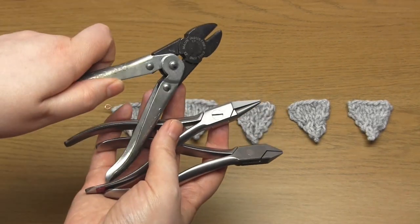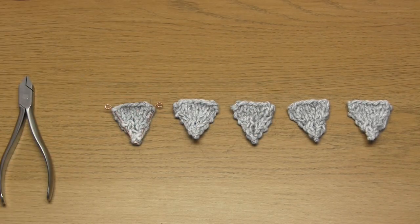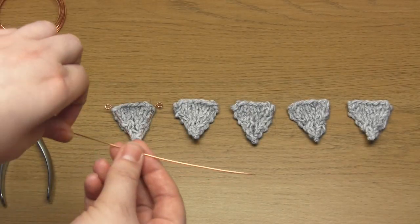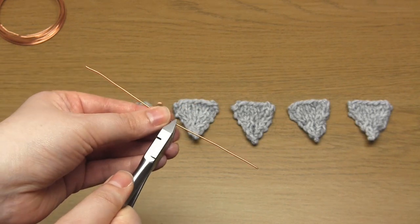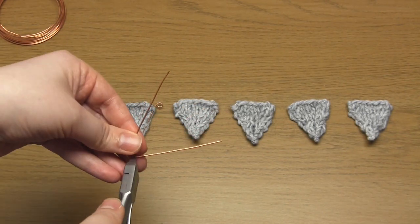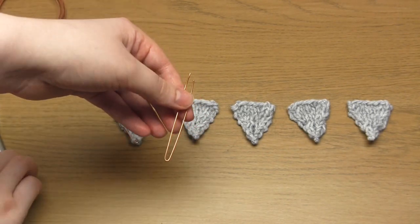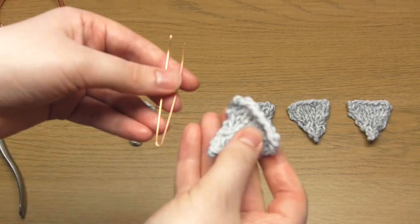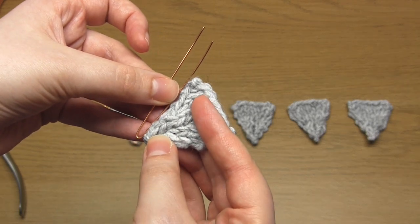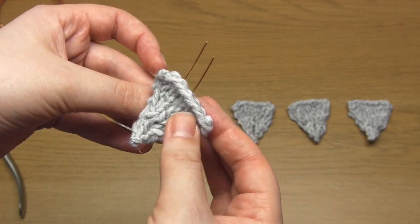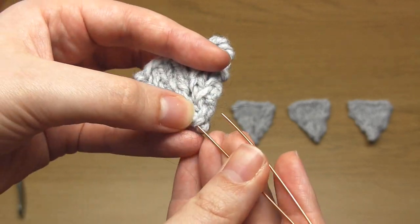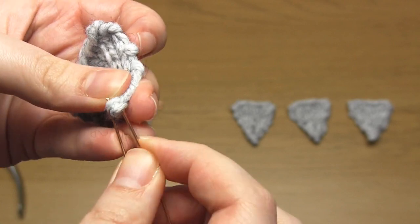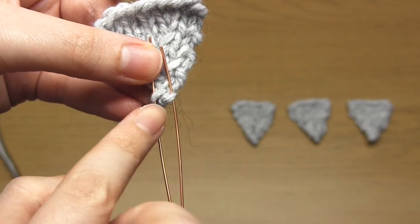Once you've made 5 triangle shapes it's time to add the copper wire. So cut a length of copper wire, like so, and bend it in half. The length of this folded wire needs to be at least half an inch longer than the sides of your knitted triangles. Feed the ends of this piece of wire into the bottom point of the triangle. So that each wire end goes under one strand of yarn. One on each side.